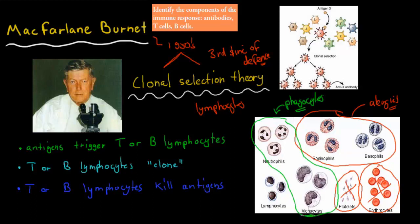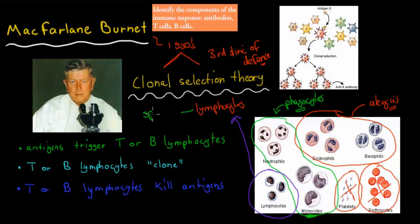Examples of monocytes would be the macrophages, which are also the ones which eat and consume the actual foreign antigens and bacteria. And then we have the lymphocytes — these are the ones we have to talk about in this video. Lymphocytes are your third line of defense. These lymphocytes are a special type of white blood cells. What makes them special is that they're actually specific, whereas the first and second line of defense was nonspecific. This is a specific type of defense mechanism, meaning this lymphocyte will only target one specific type of pathogen.